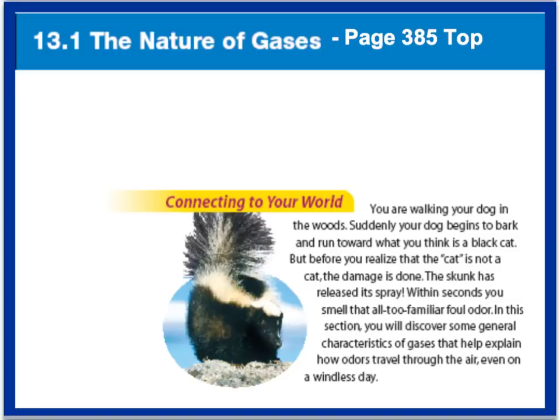So I have this first sample problem here to get you thinking. It says you are walking your dog in the woods and suddenly your dog begins to bark and run toward what you think is a black cat. But before you realize that the cat is not a cat, the damage is done — the skunk has released its spray. Within seconds you smell that all too familiar foul odor. In this section you will discover some of the general characteristics of gases that help explain how odors travel through the air even on a windless day.